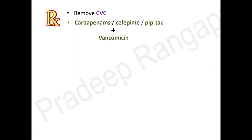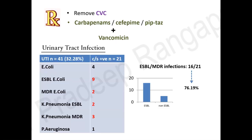For CRBSI treatment, source control is the first priority — remove the catheter after inserting another line for ongoing medications. Since CRBSIs develop predominantly in hospital, broad-spectrum antibiotics such as carbapenems or fourth-generation cephalosporins are needed, along with vancomycin given the high MRSA risk. Once culture results identify the specific organism, de-escalate to the narrowest appropriate antibiotic.